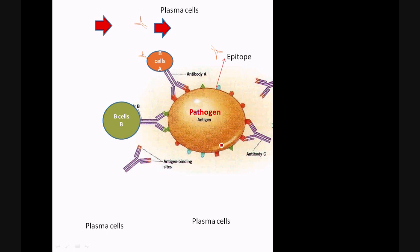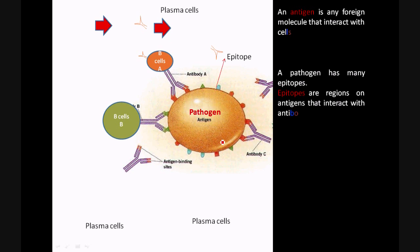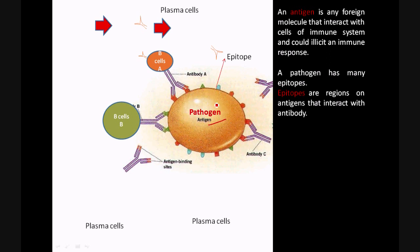Now, moving into antigen. An antigen is any foreign molecule — the majority of them are proteins, nucleic acids, or polysaccharides — that can interact with cells of the immune system and elicit an immune response. Suppose this is a bacterium that has entered the system; this pathogen or antigen has a number of surface epitopes or antigenic determinants. Epitopes are regions on antigens that interact with antibodies.